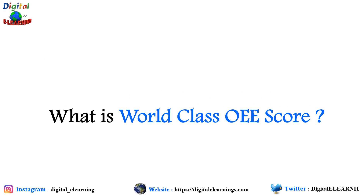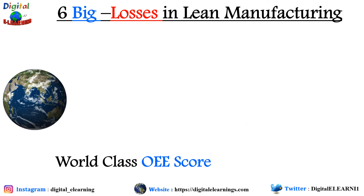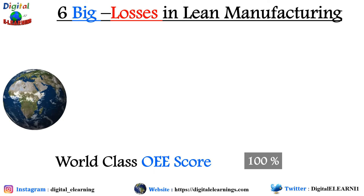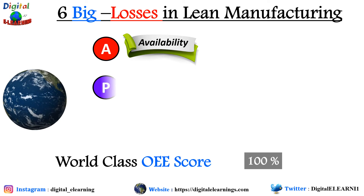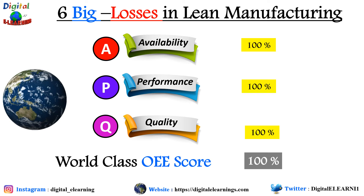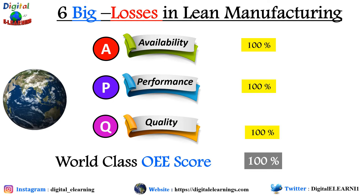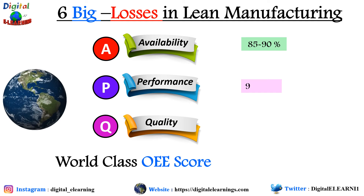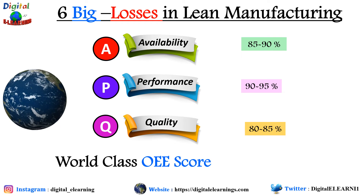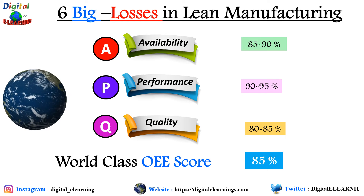What is the world-class OEE score? Can we achieve an OEE score of 100%? Theoretically yes — we would need availability, performance, and quality all at 100%. But in practicality this is almost impossible. Normally, availability is around 85–90%, performance around 90–95%, and quality around 80–85%. Combining these factors gives a world-class OEE score of around 85%.